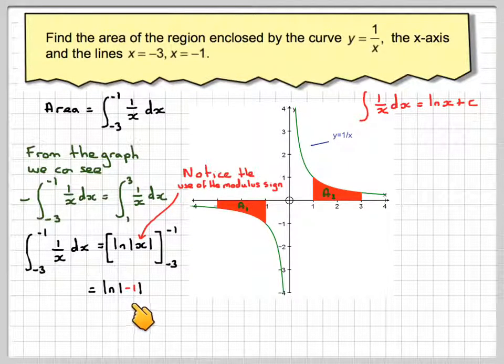So this is going to be ln of modulus of minus 1, substituting in the limits, minus ln of modulus of minus 3. The modulus sign means ignore the minus sign, so we're going to have ln of 1 minus ln of 3.